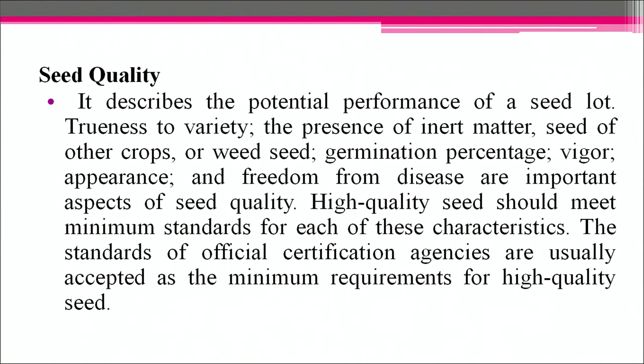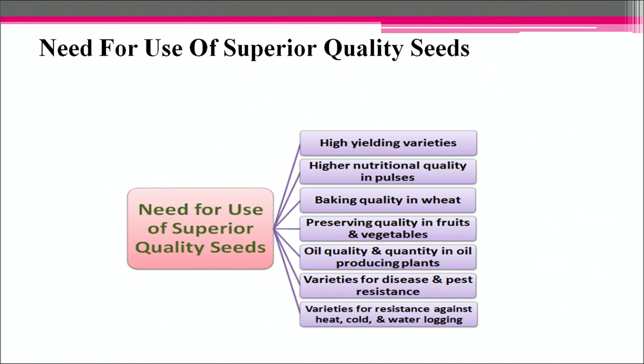Seed quality describes the potential performance of a seed lot. It includes trueness to variety, the presence of inert matter, seeds of other crops or weed seeds. Germination percentage, vigour, appearance and freedom from disease are important aspects of seed quality. High quality seeds should meet minimum standards for each of these characteristics. Superior quality seeds have characteristics such as high yielding varieties, higher nutritional quality in pulses, baking quality in wheat, preserving quality in fruits and vegetables, oil quality and quantity in oil-producing plants, varieties for disease and pest resistance, and varieties for resistance against heat, cold and water logging.